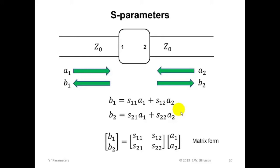The defining equations here in the middle of the slide can be interpreted as follows. Each outbound power wave, that is B1 or B2, can be described as the combination of two inbound waves, that is A1 and A2, and the S parameters are simply the combining coefficients that we use to do that.